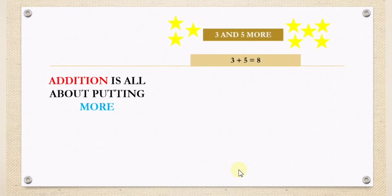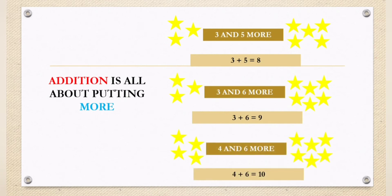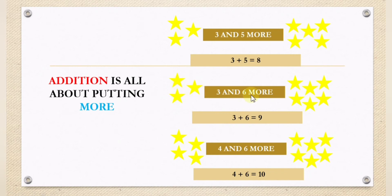Addition is all about putting more. In the first example, we have 3 stars and 5 more. If we put them together, we have 3 plus 5 equals 8 — there will be 8 stars. In the second example, we have 3 and 6 more. So, 3 plus 6 equals 9.